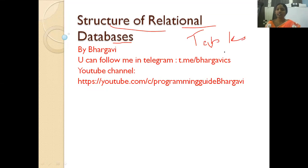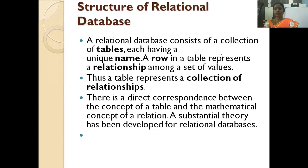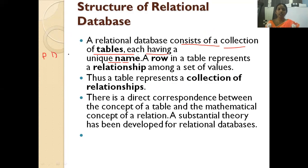The structure of the relational database: a relational database consists of a collection of tables, each having a unique name. For example, in a hospital database, we have a patient table, doctor's table, administration table, and management table — all with different unique names so they don't get confused. A row in a table represents a relationship among a set of values.